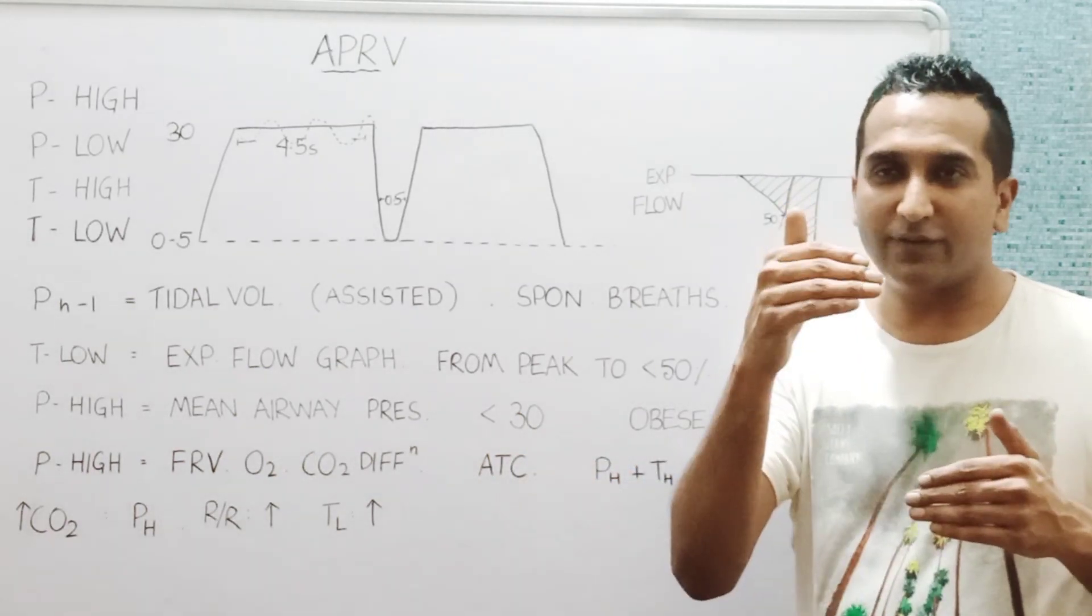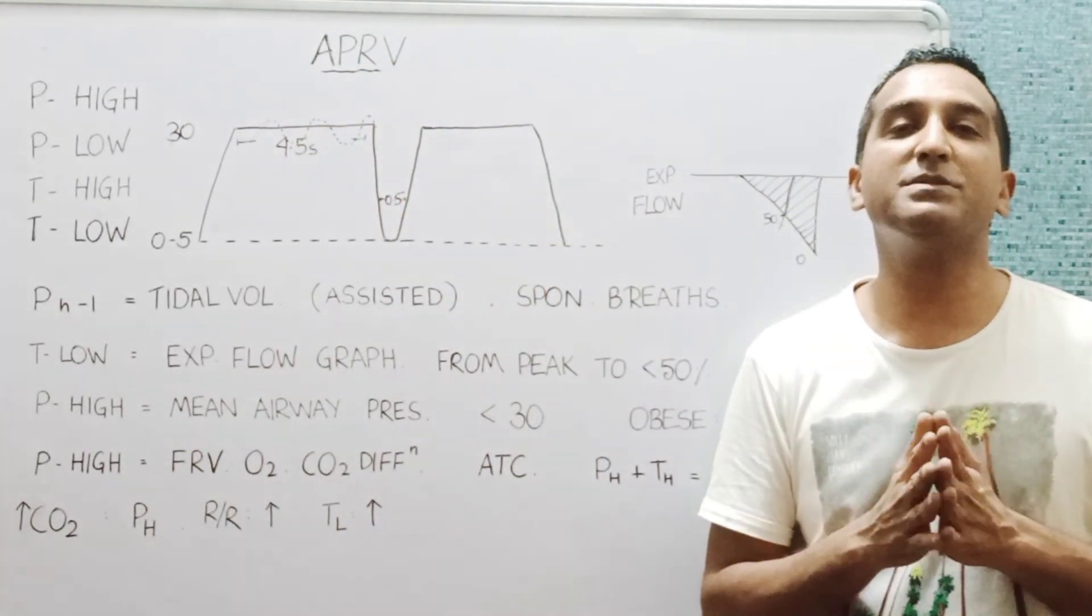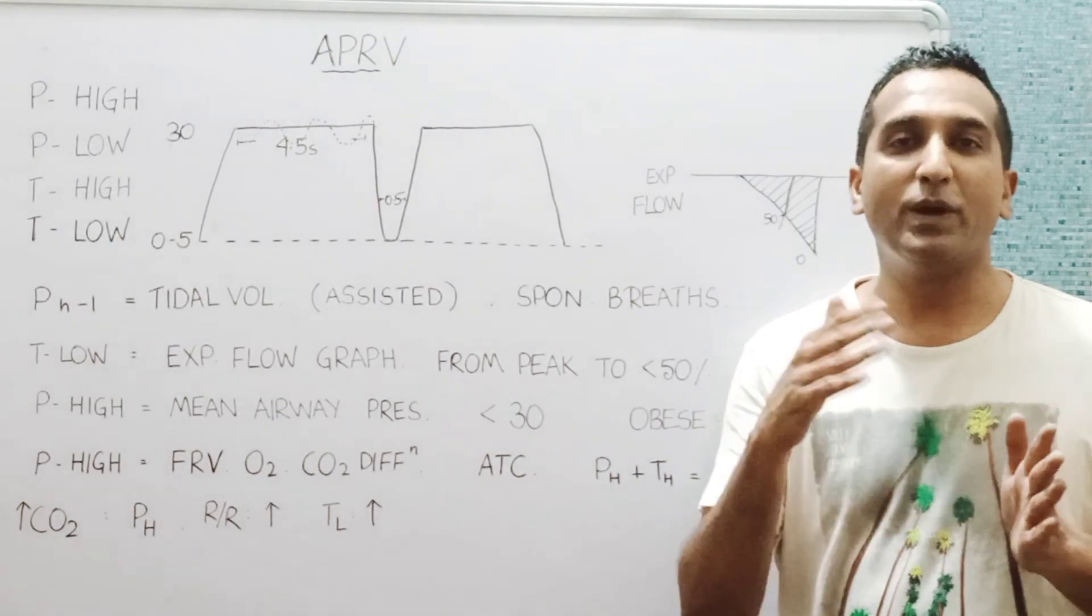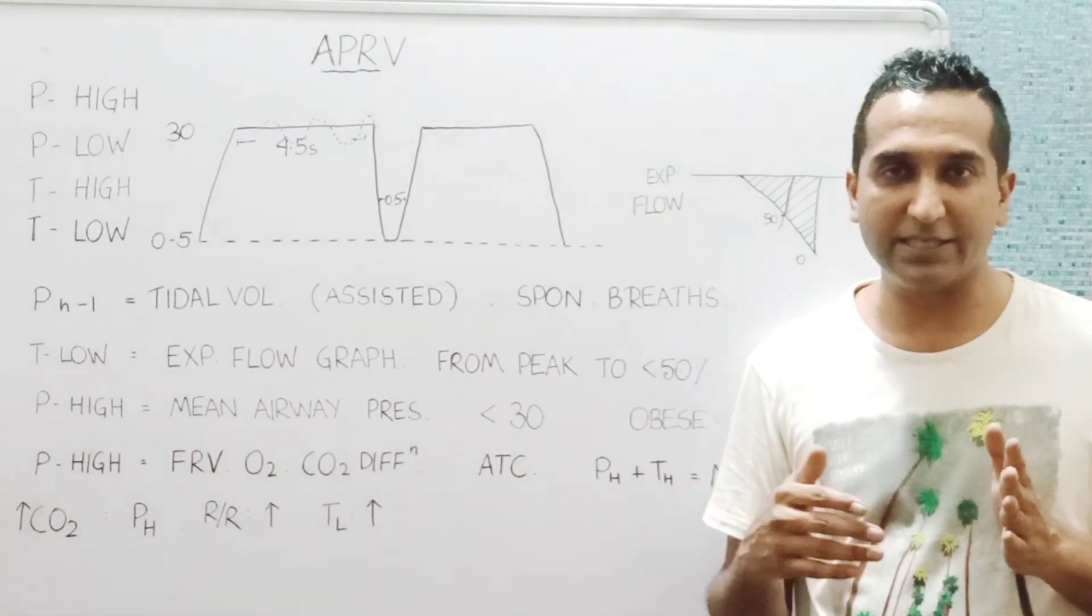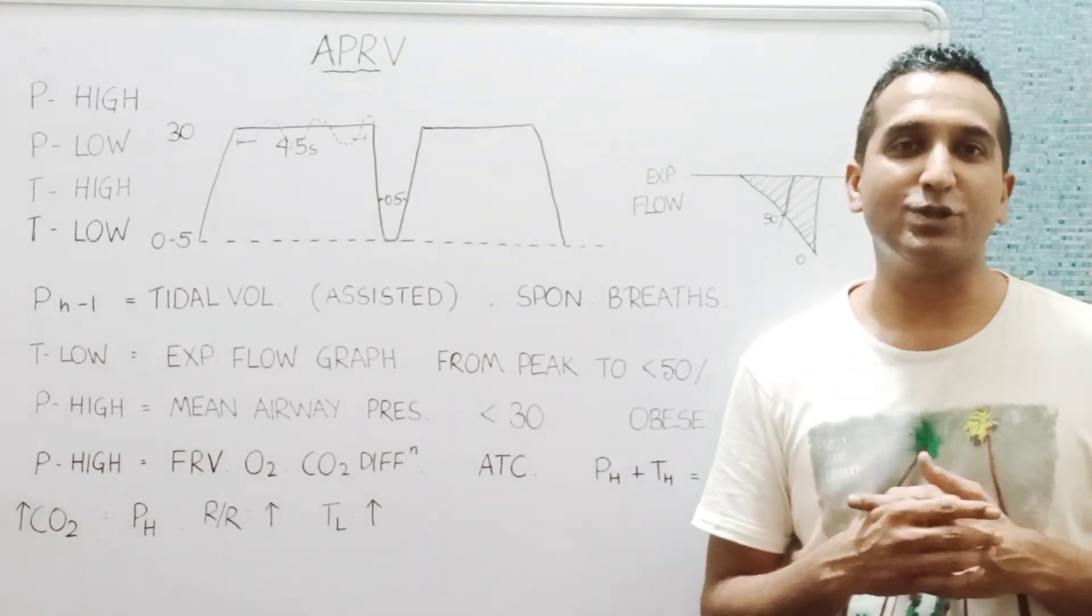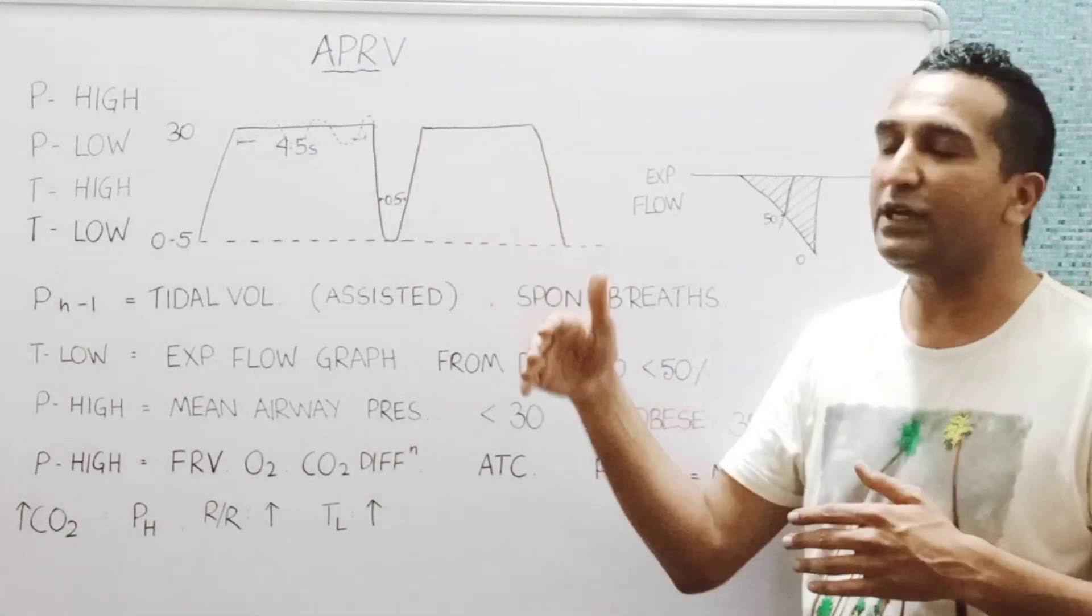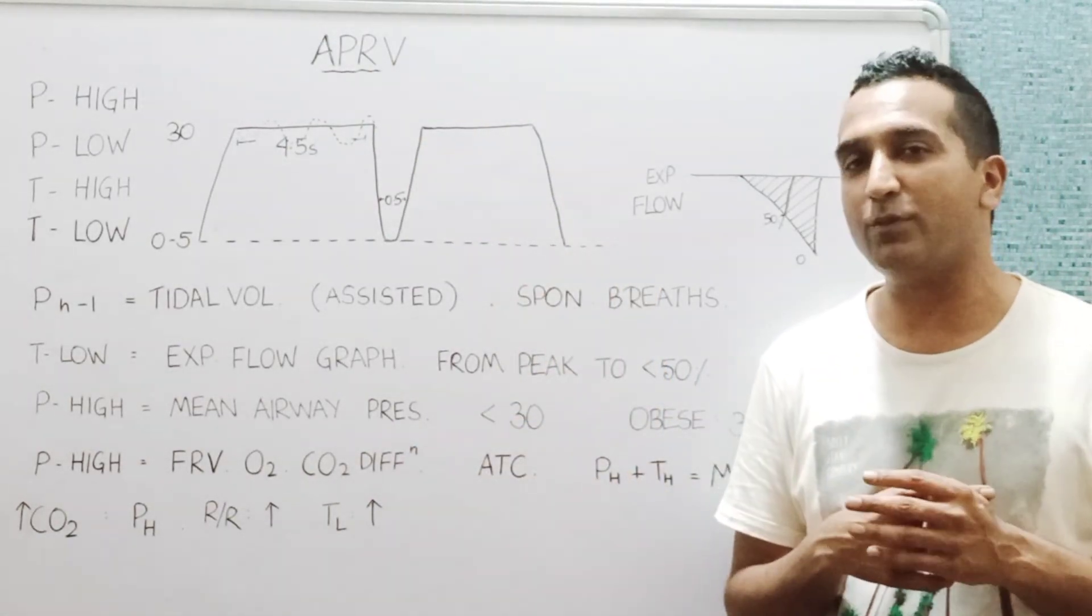So at certain point of times, as we keep decreasing the pressure, the releases are very few and it almost becomes like a CPAP mode where the patient is able to breathe spontaneously. At this point of time, maybe you can consider to switch over them to pressure support. But that depends. But if this strategy is working, we can actually wean off the patient totally in the APRV mode itself.